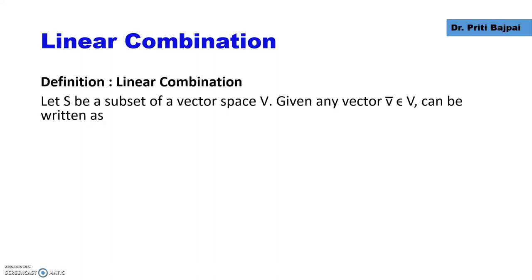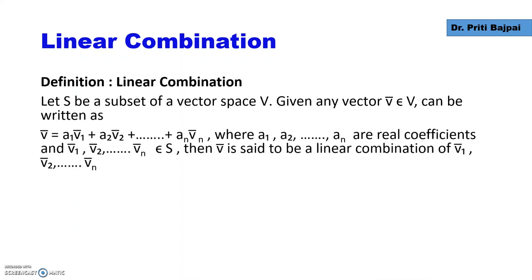We'll start with the vector space capital V and take a subset S of this vector space. If we take small v to be some vector of a vector space and take v₁, v₂, vₙ etc. to be vectors from the subset S.